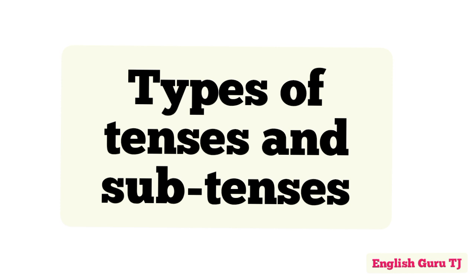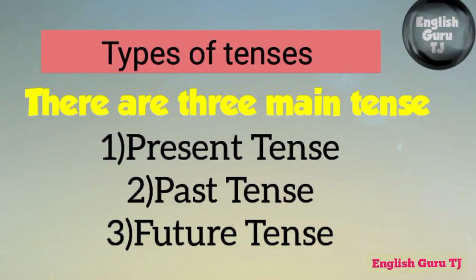There are three main tenses everybody knows, but when we talk about sub-tenses people get confused. The three main tenses are present tense, past tense, and future tense. But every tense has four sub-tenses — present tense has four sub-tenses, past tense has four sub-tenses, and future tense also has four sub-tenses. These are really, really important.